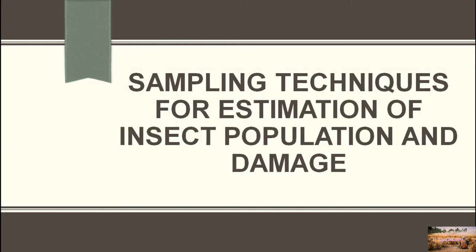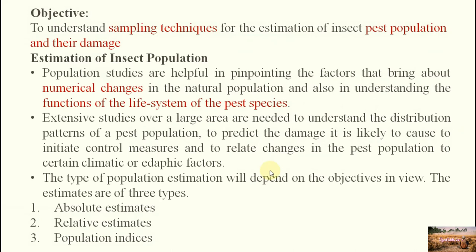Today we are going to discuss two things: the techniques for sampling for estimation of the insect population — how many insects are there — and how much damage they can cause. The objective of this experiment is sampling techniques for two things: pest population and the damage they are likely to cause. First, we will try to discuss estimation of insect population.